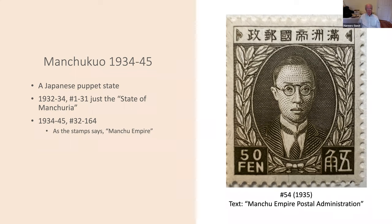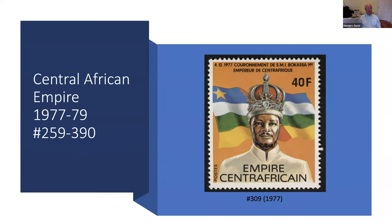Manchukuo obviously did not have to go around conquering anybody. Then there is the Central African Empire — a very strange thing. The Republic of Central Africa existed before and after this man: he was president of the Republic, then changed it into an empire as president. The coronation commemorated here supposedly cost the country half of its GDP for that year.